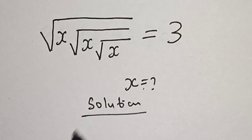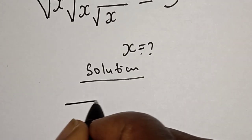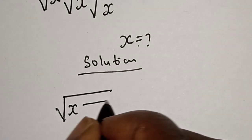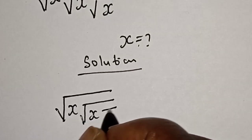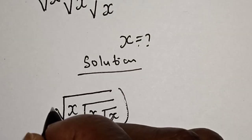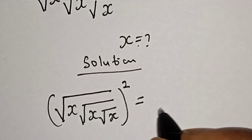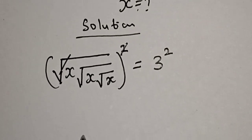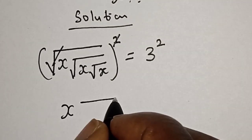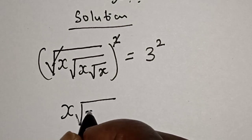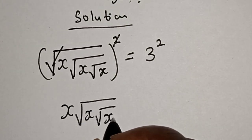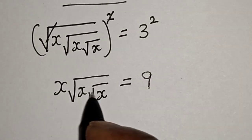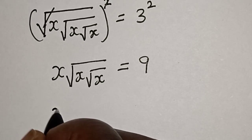Let's take the square of both sides. That is, root of s times root of s times root of s, squared, is equal to 3 squared. Then this will cancel, and we have s times root of s times root of s is equal to 3 squared, that is 9.